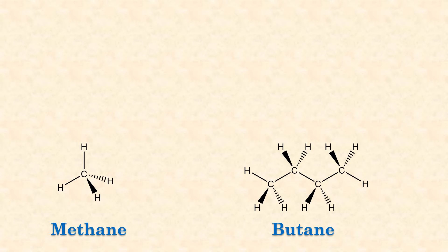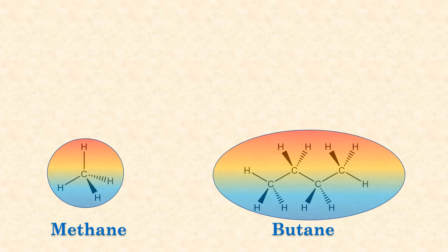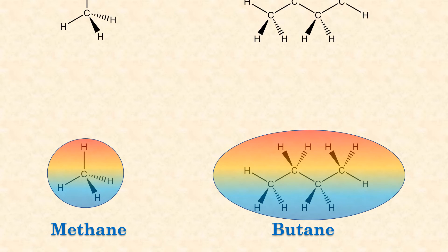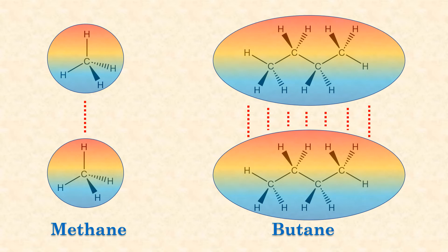Now consider nonpolar molecules like methane and butane. Both are nonpolar because of their symmetry. But if the electron cloud is distorted, a temporary dipole can occur. This can induce another temporary dipole on a nearby molecule.